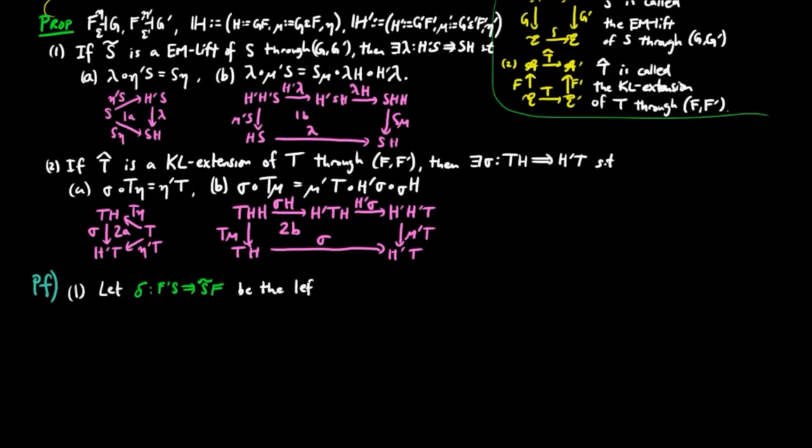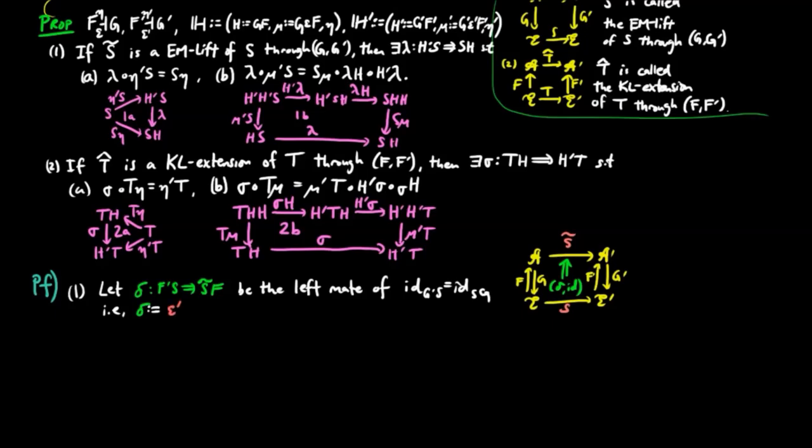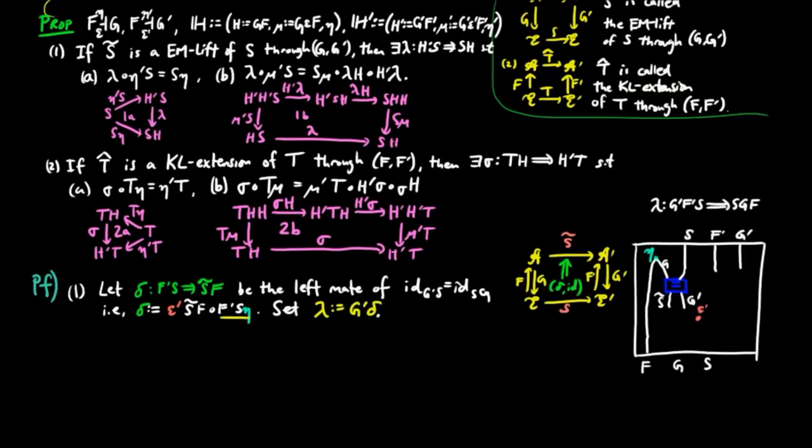For the proof of 1, let delta be the left mate of the identity natural transformation from SG to G'S tilde. In other words, delta is equal to epsilon prime S tilde F F prime S eta. And we set lambda to be G'delta, given by the following string diagram.